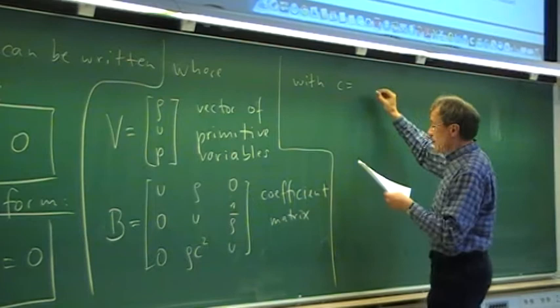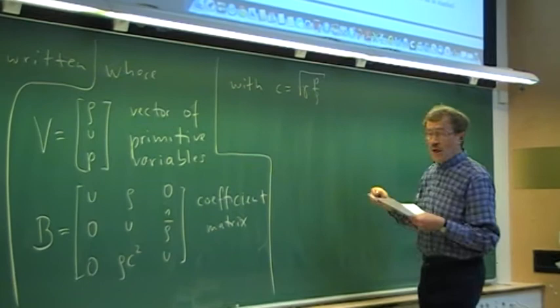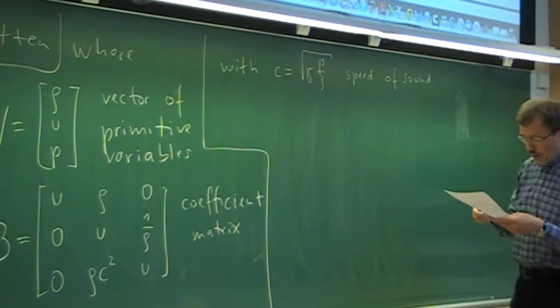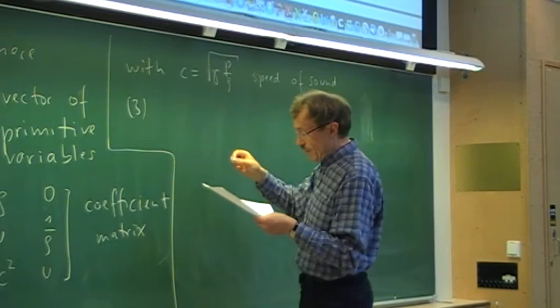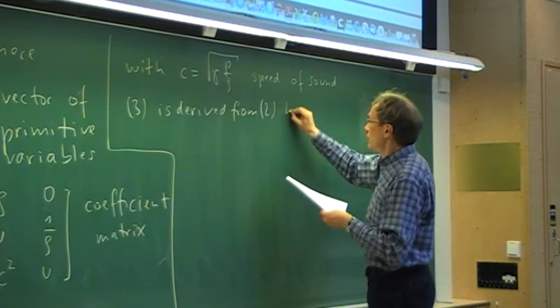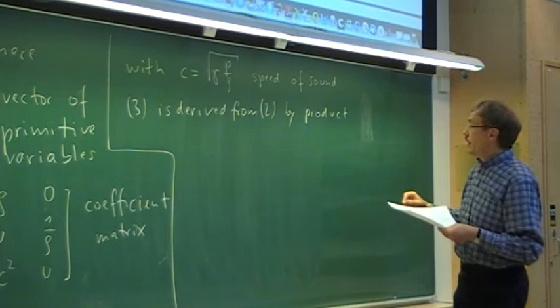For the momentum equation we get in the second row: u, rho, and 1/rho. And in the third row, from the energy equation, we get rho*c², and u again, where c is the speed of sound. That is the coefficient matrix. It is derived from the conservative form to the non-conservative form using the product rule.